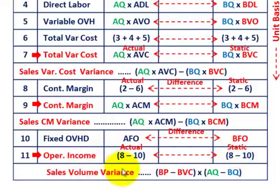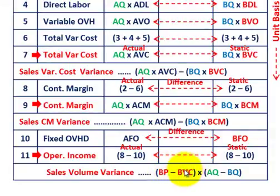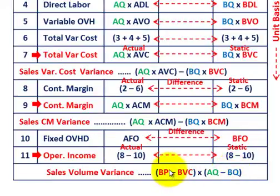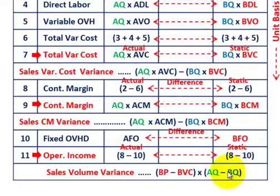The sales volume variance is calculated as the budgeted price per unit minus the total budgeted variable cost per unit — that difference times the difference between actual quantity sold and budgeted quantity. So it's the budgeted contribution margin per unit times the difference between actual and budgeted quantity sold.